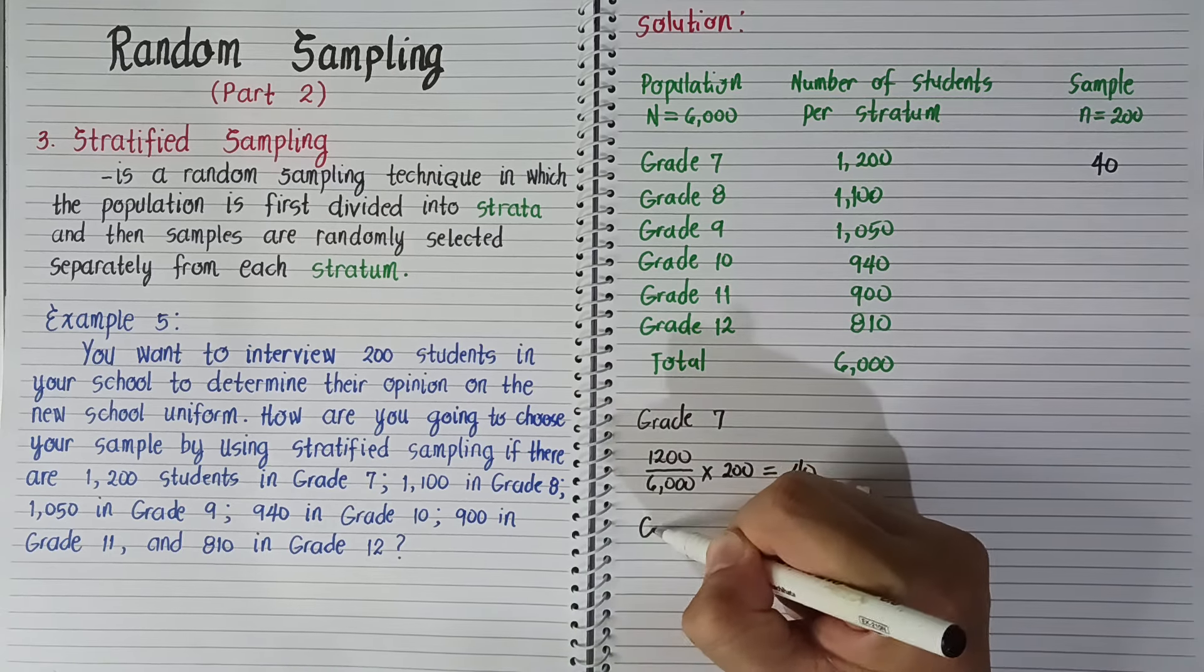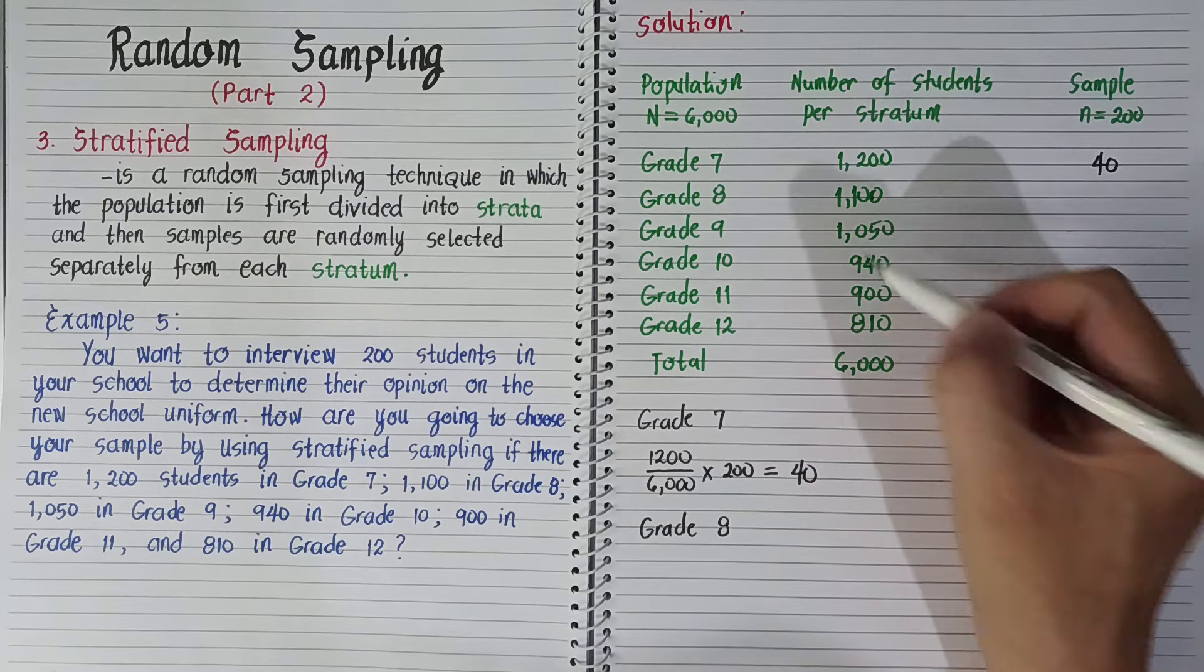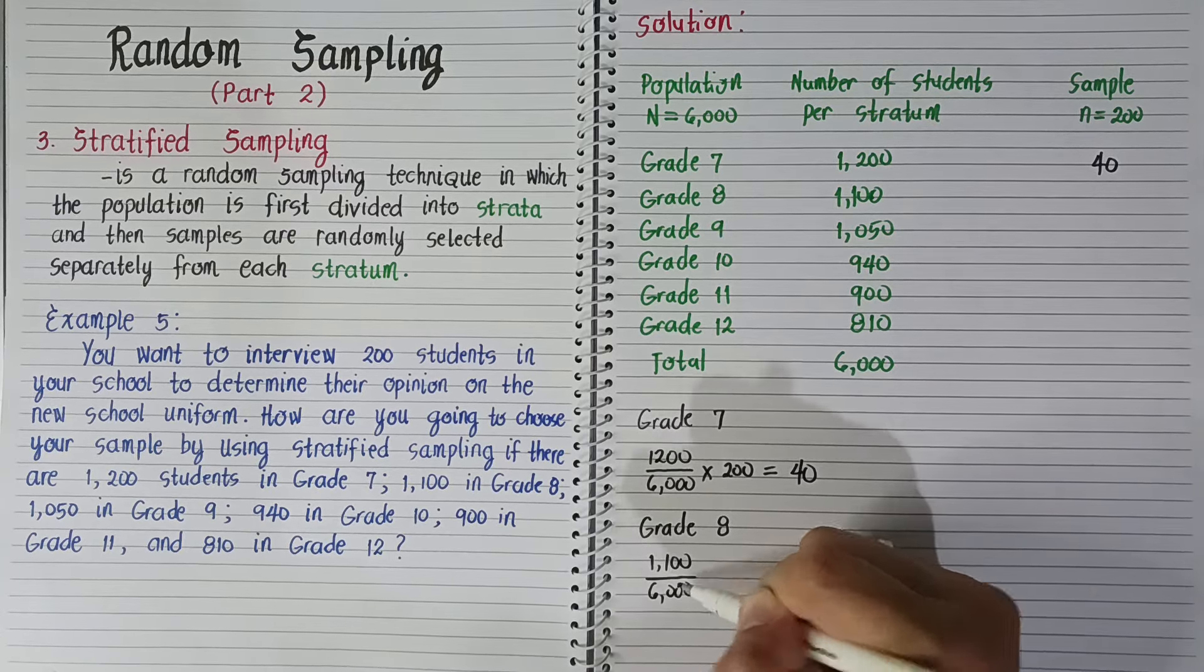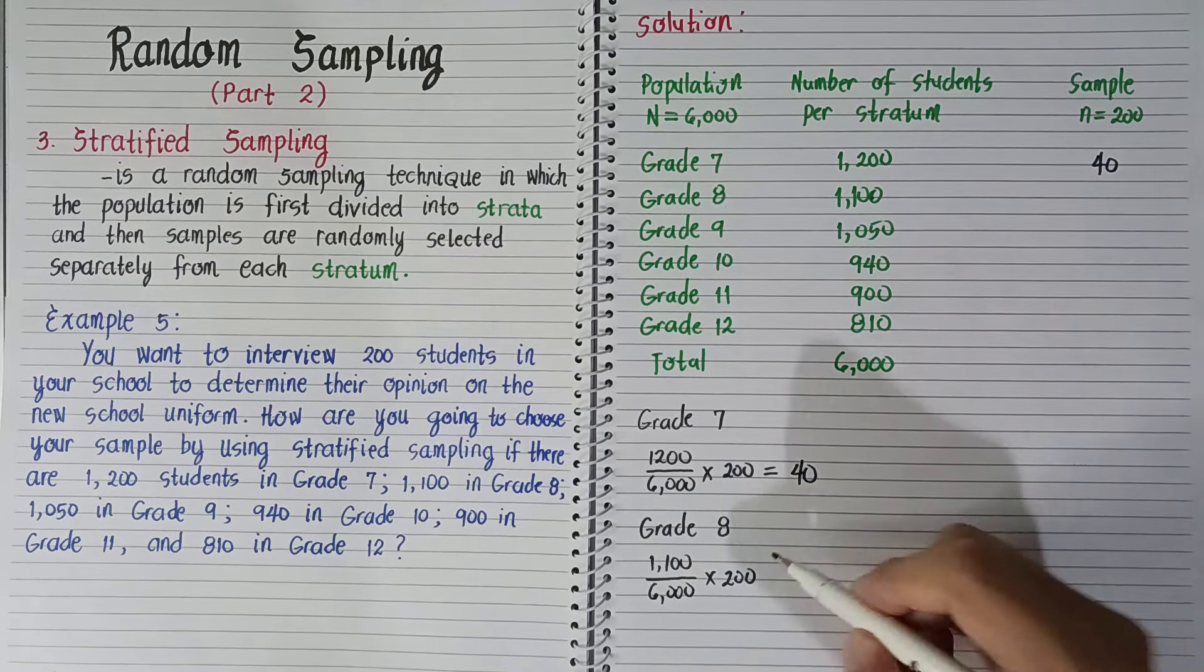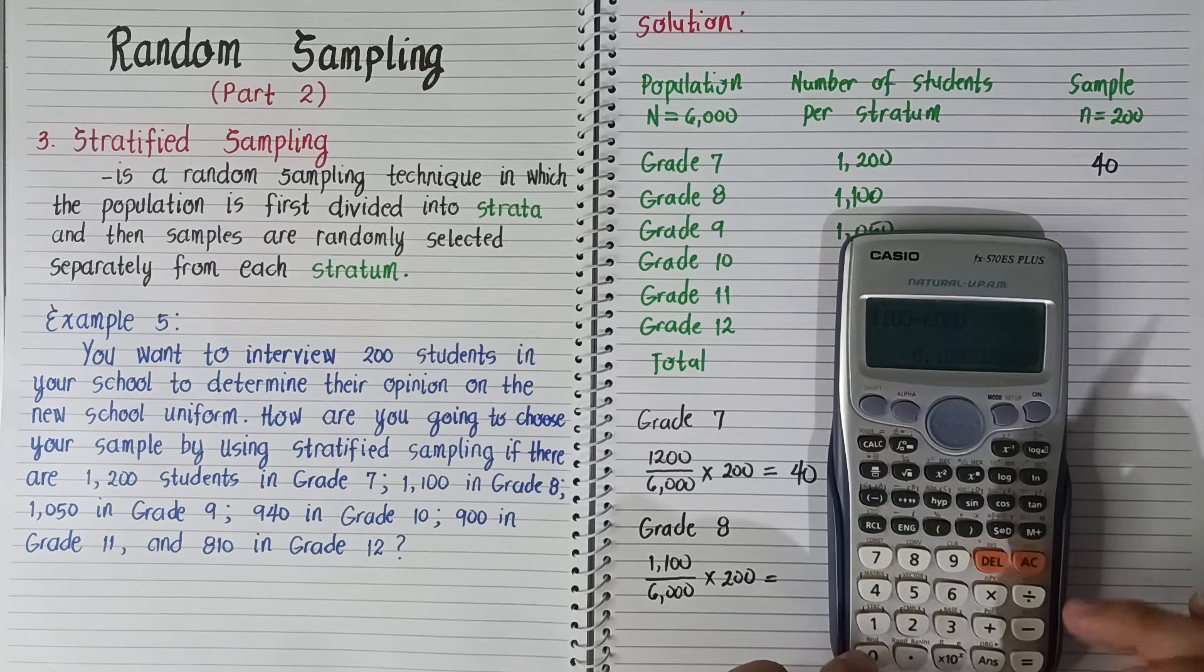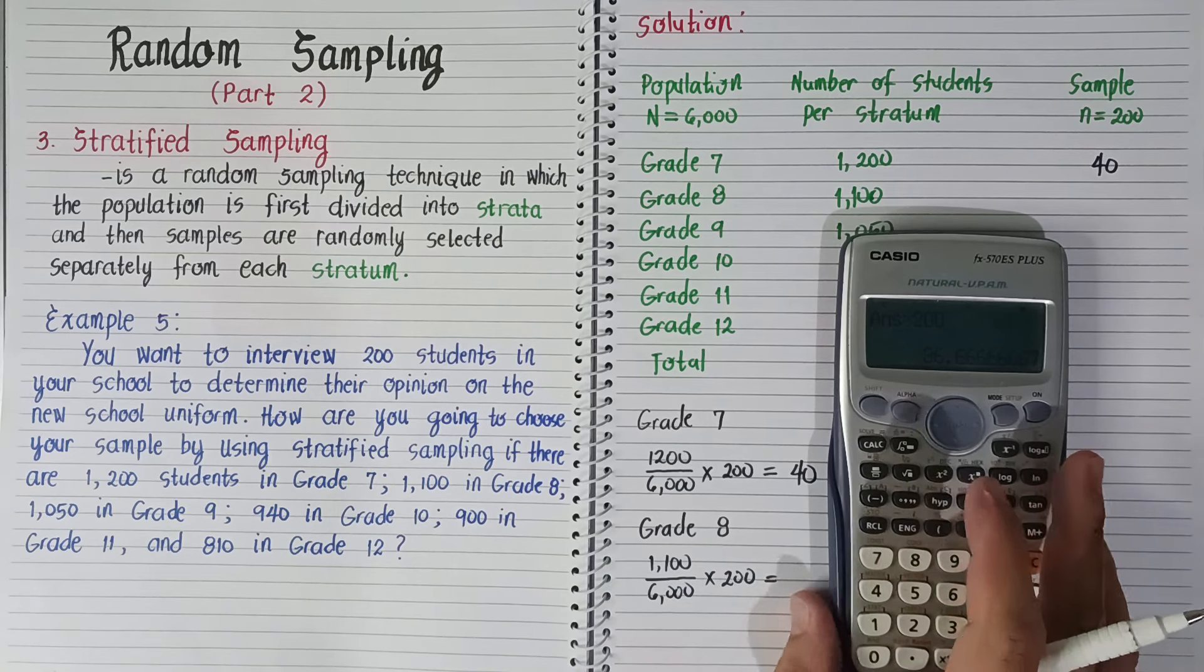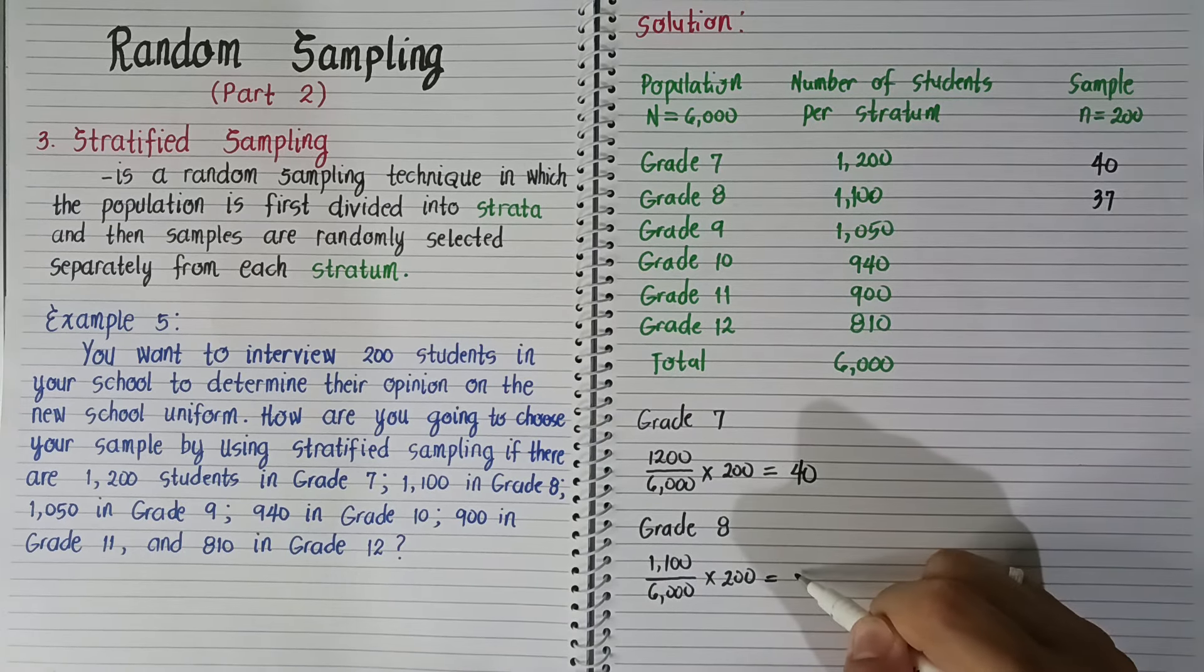For grade 8, we have 1,100 divided by 6,000 times 200. Using the calculator, 1,100 divided by 6,000 times 200 equals 36.6667. We'll round off, rounding up, so this becomes 37.